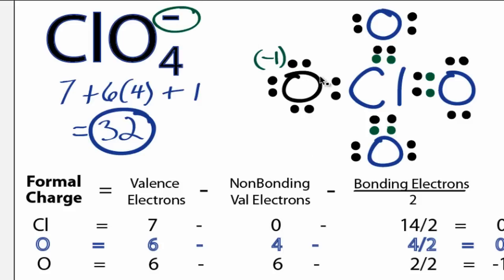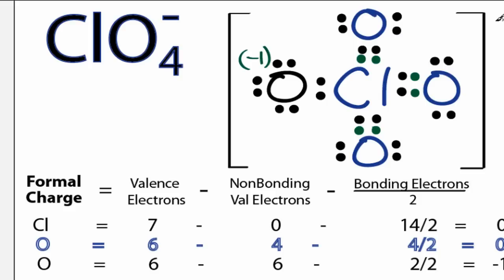And there's one last thing we need to do. We'll put brackets around our structure to show that it is a negative ion, and then put our negative 1 charge on the outside. So this is the best Lewis structure for ClO4-.